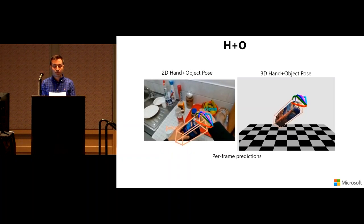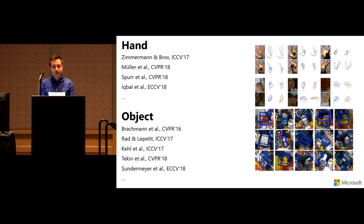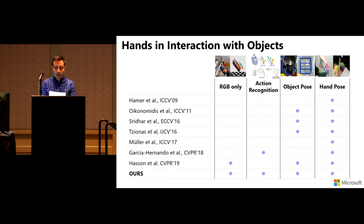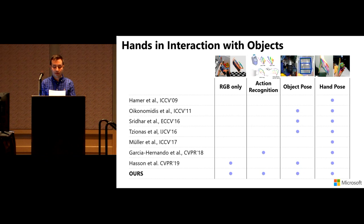Existing work on hands and objects in isolation is extensive, but joint understanding has received far less attention. Relevant studies are limited: they rely on depth sensors or multi-camera systems, do not reason about the action being performed, and focus on hand motion without recovering object pose in 3D. Our three contributions address all these issues: a unified framework for 3D hand-and-object interaction recognition solving four tasks simultaneously.